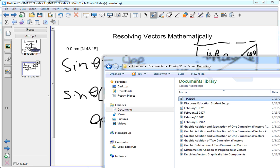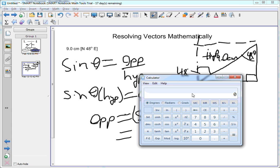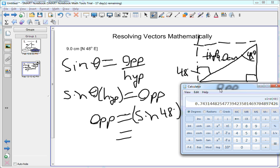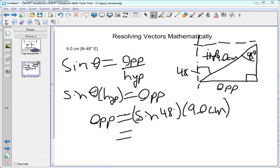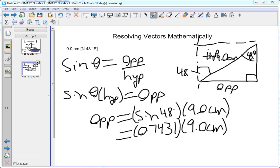Using our calculator, 48 degrees, sine of that is 0.7431. Times 9.0 centimeters. Calculate that. And we have 6.688 centimeters.